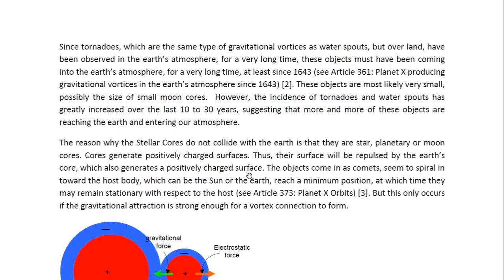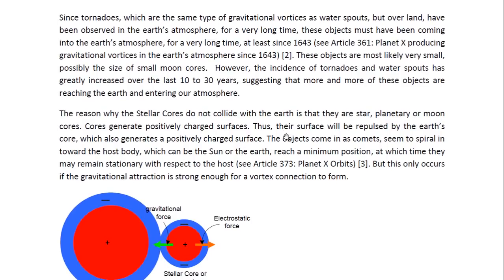Since tornadoes are the same type of gravitational vortices as water spouts, but over land, and have been observed in the Earth's atmosphere for a very long time, these objects must have been coming into the Earth's atmosphere for a very long time — at least since 1643. For more details, you may look at Article 361 entitled, Planet X Producing Gravitational Vortices in the Earth's Atmosphere Since 1643. These objects are most likely very small, possibly the size of small moon cores. However, the incidence of tornadoes and water spouts has greatly increased over the last 10 to 30 years, suggesting that more and more of these objects are reaching the Earth and entering our atmosphere.